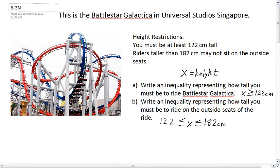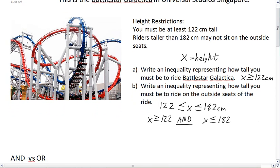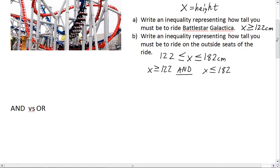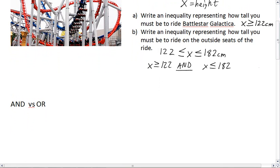There's another way to write this separately: x is greater than or equal to 122 and x is less than or equal to 182. Some people like doing it that way because you've got the separate pieces clearly. Some people get confused about the signs, so this format may be easier. Now let's talk about the word 'and' in compound inequalities — when we put things together, we use two key words: 'and' and 'or'.